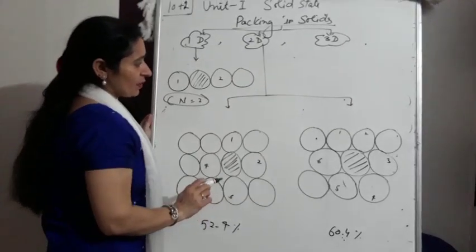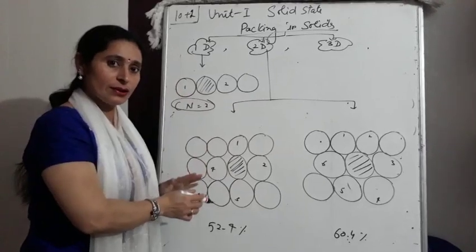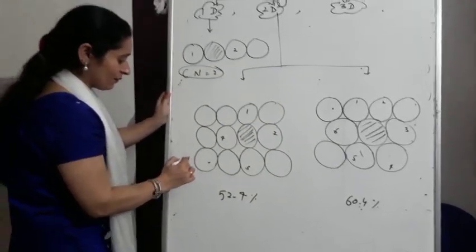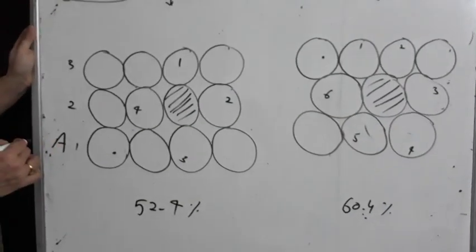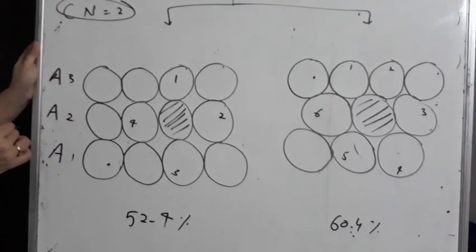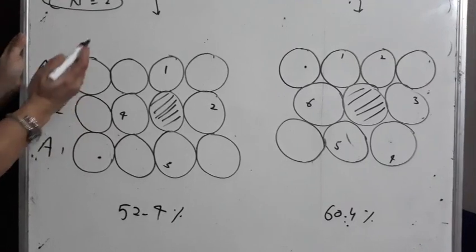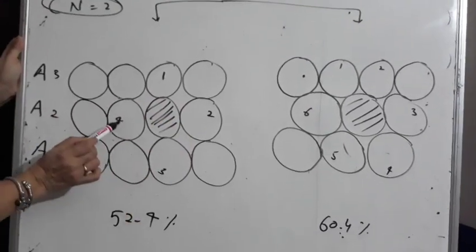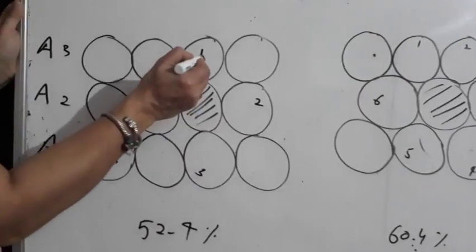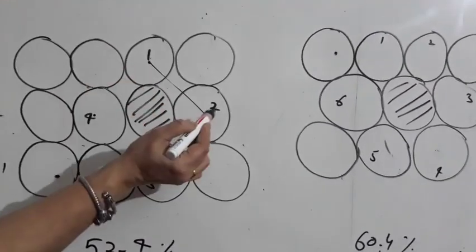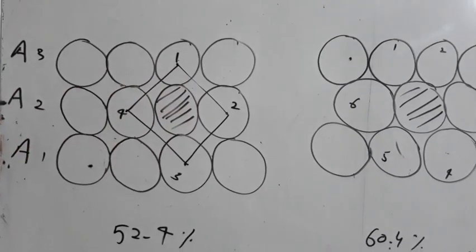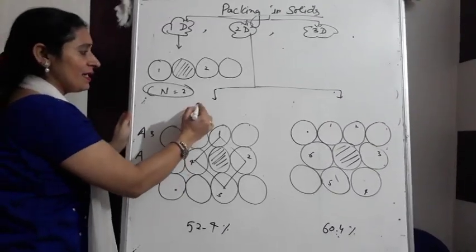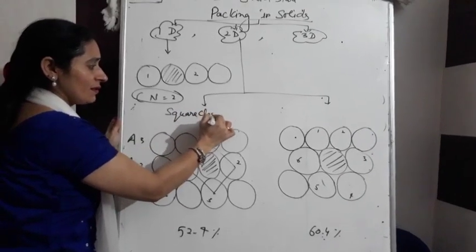Now let's see packing in two dimensions. Looking at the shaded sphere, it touches one, two, three, and four neighbors. If we join their centers, this forms a square. This particular packing, where the stacking is one row directly after another, is called square close packing.